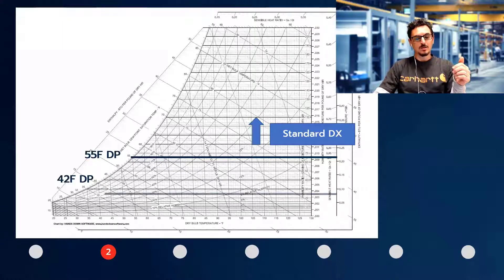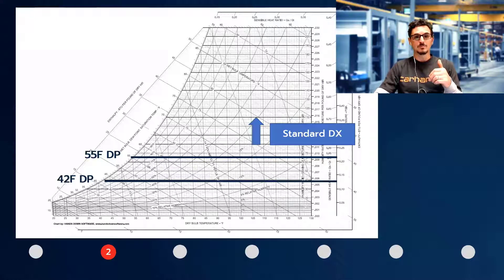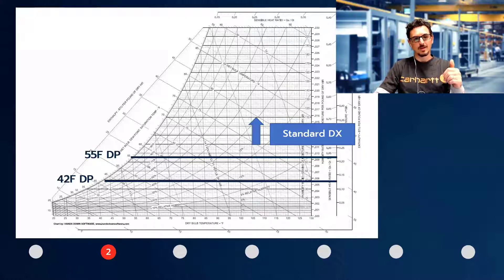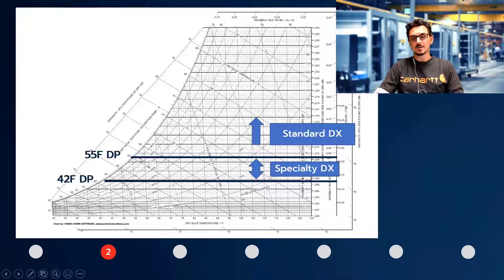When we look at low dew point, at least in the world of using AOM type specialty DX equipment, it's usually down to about 42 degree dew point. That's really about the cutoff I like to think of. So in this area — 42 degree dew point to 55 degree dew point — we're in specialty DX type equipment, which AOM certainly falls under.